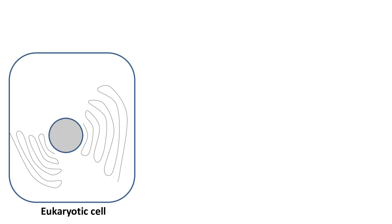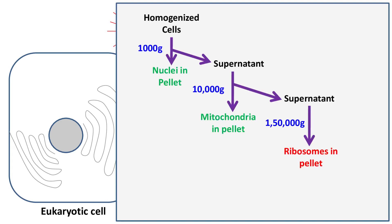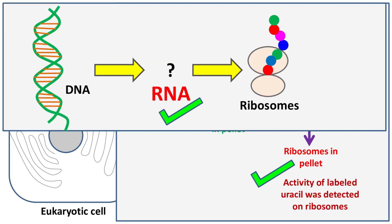So they repeated the same experiment with labeled uracil and separated the cell components by ultracentrifugation. The activity of labeled uracil was detected on the ribosome. This means there is some RNA that brings the information from DNA to the ribosome.